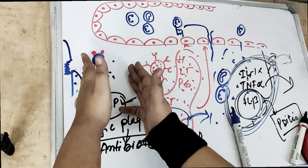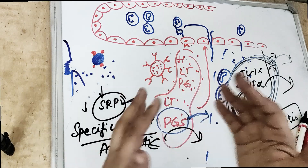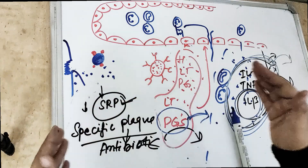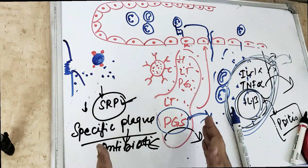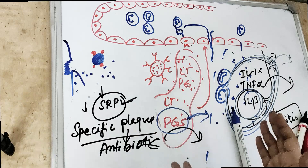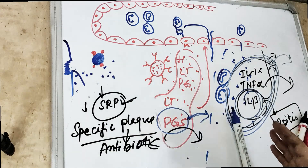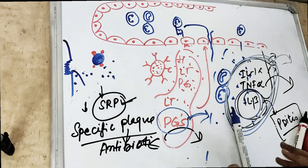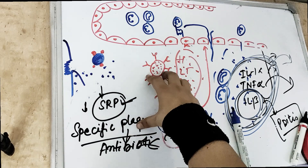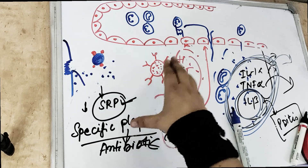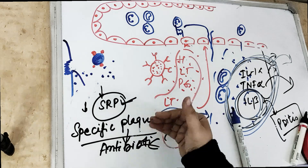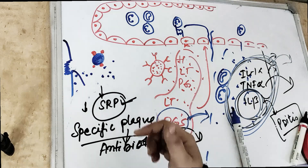When bacteria comes, our body does some mechanism and releases substances which, if uncontrolled, cause destruction of our own body. Chronic inflammation can cause resorption of bone, destruction of tissues, and destruction of tooth-supporting structures. If we can reduce this inflammation, we can reduce the disease. This is the concept behind host modulation therapy — to resolve the inflammation and resolve the disease.